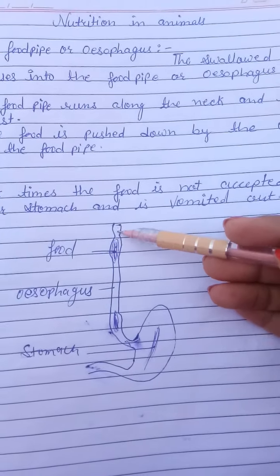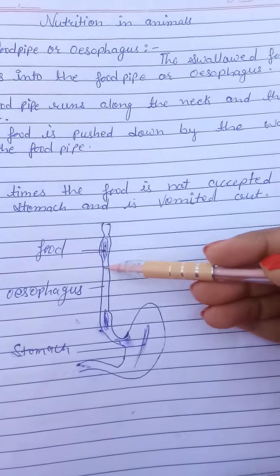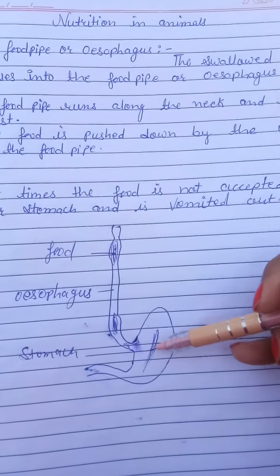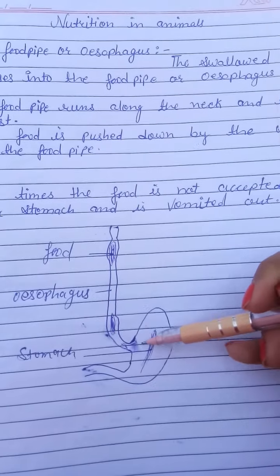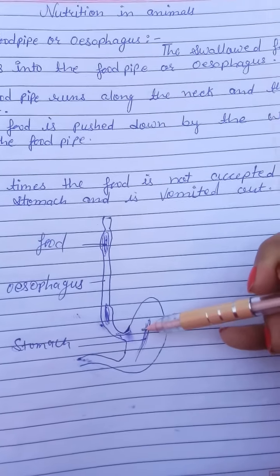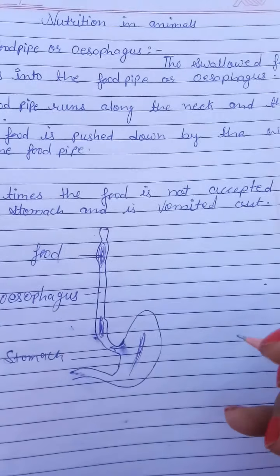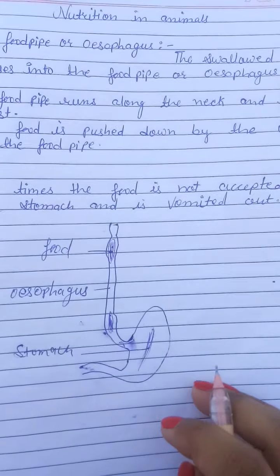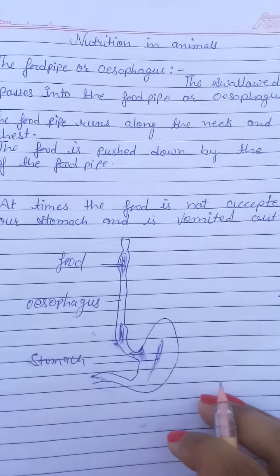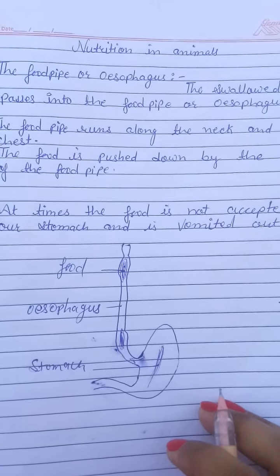Now we see a diagram of the esophagus. This is the esophagus — the swallowed food is pushed into the stomach. Here, digestion of food begins. We already know what digestion is: the breakdown of complex substances into simpler substances is called digestion.